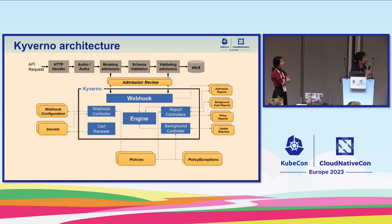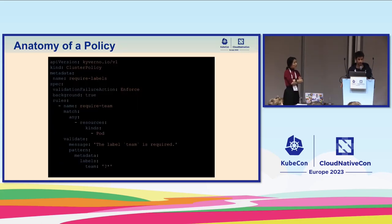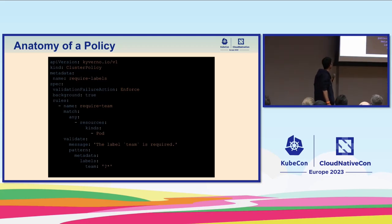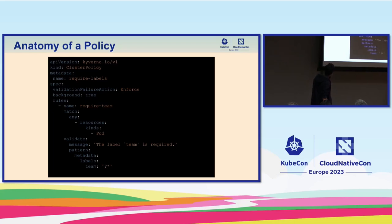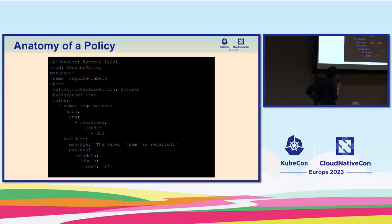The report controller maintains reports inside the cluster, while the background controller is responsible for generate policies and mutating existing resources. Looking at what a policy looks like in Kyverno: it's very similar to any Kubernetes resource — we have an API version and a kind, which in this case is `kyverno.io/v1` and `ClusterPolicy`, meaning the policy applies to the whole cluster and not just a specific namespace. There is also a metadata section with name, labels, and annotations.